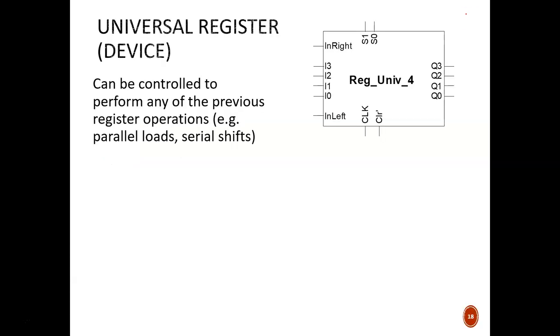Here we see the device symbol for the 4-bit universal register we'll design for this class. The internal schematic will be shown on the next slide. There are other designs out there, including different input and output ports, different numbers of bits, different modes of operations, but this will be a sufficient and simple enough design to illustrate how universal registers work in general.